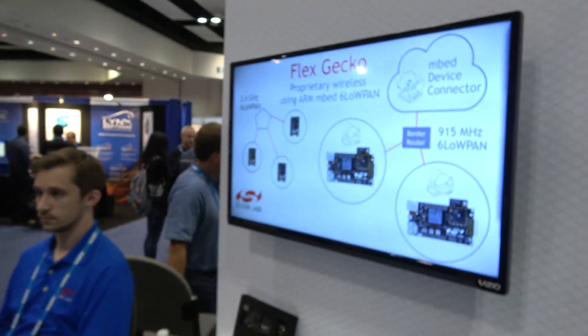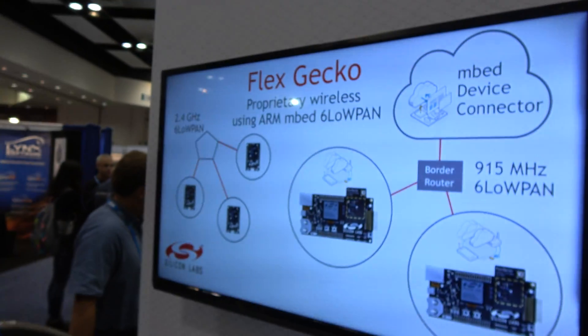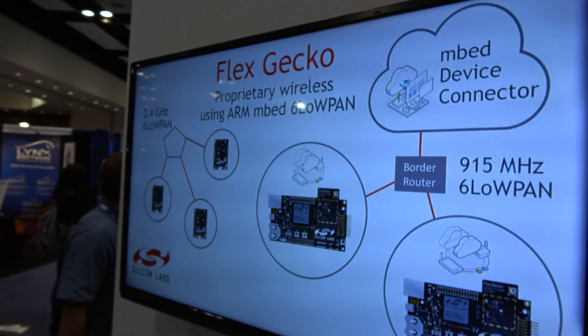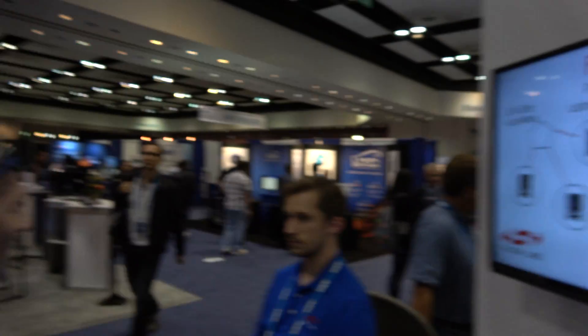So what are you showing here? What is the Flex Gecko? Flex Gecko is the name for our 32-bit wireless SoC. It's a dual-band multi-protocol SoC, so that means it can do 2.4 gigahertz and it can do sub-gigahertz — all of the bands on sub-gigahertz.